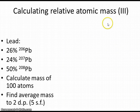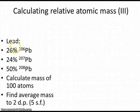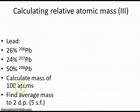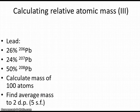Here's a slightly more complicated example: lead. The mass spectrum reveals there are three isotopes of lead and shows the percentage abundance of each — the number of atoms of lead there would be in a sample of 100. The strategy is the same: work out the mass of 100 atoms and then find the average, in this case to two decimal places or five significant figures. Why don't you pause the video now and do the calculations using those numbers to see what you get?